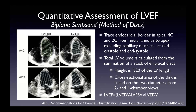The computer divides your tracings into 20 equidistant discs in the apical four and two-chamber views. The height of each disc is 1/20th of the left ventricular length. You calculate the cross-sectional area of each disc based on the two diameters in the two and four-chamber views, then calculate the volume of each disc. You add the volumes to create the LV end-diastolic volume and end-systolic volume. The difference is the total stroke volume, and dividing that by the LV end-diastolic volume gives the LV ejection fraction.